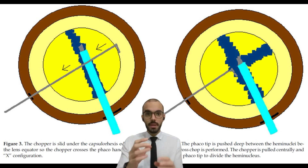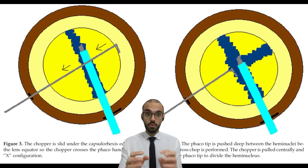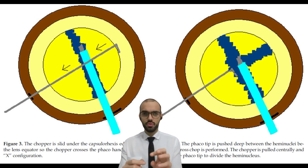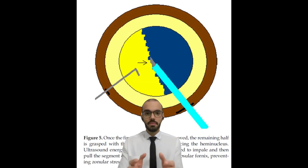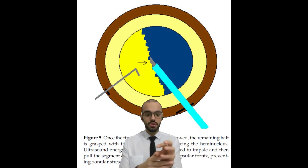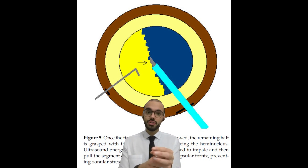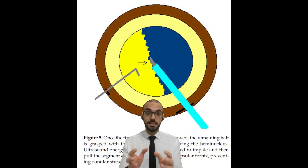The fourth step: with the two small pieces, you remove one of them using phaco without rotating the nucleus. You can use your chopper to bring the pieces near to your tip and remove them. After removing one piece, you are left with half of the nucleus. With your tip, you rotate it and place the opening of the tip near your remaining half piece, then remove and phacoemulsify it. That is the end of the Cross Chop technique.